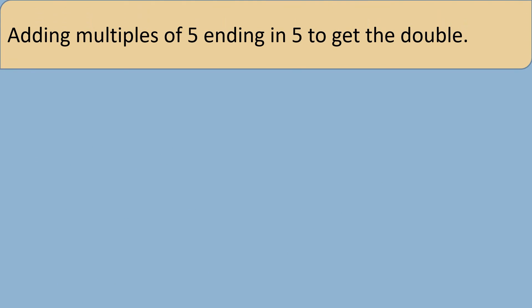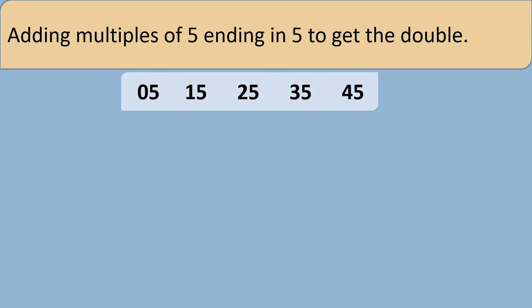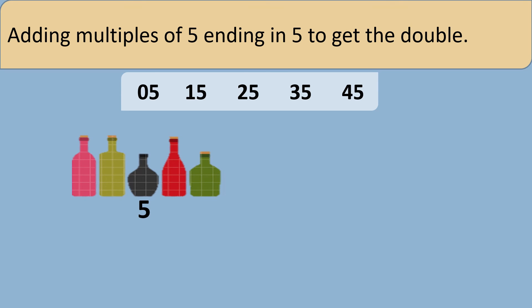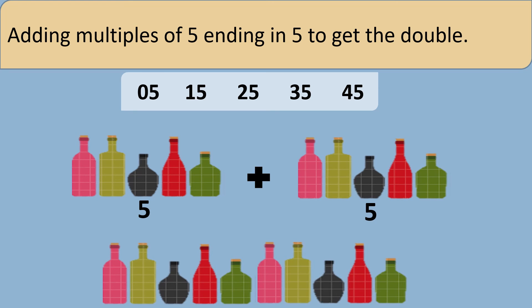Now let's see how we can add those multiples of 5 which end in the number 5 to get the double. The multiples which end in 5 are 5, 15, 25, 35, and 45. We know that 5 plus 5 equals 10, so the double of 5 is 10.